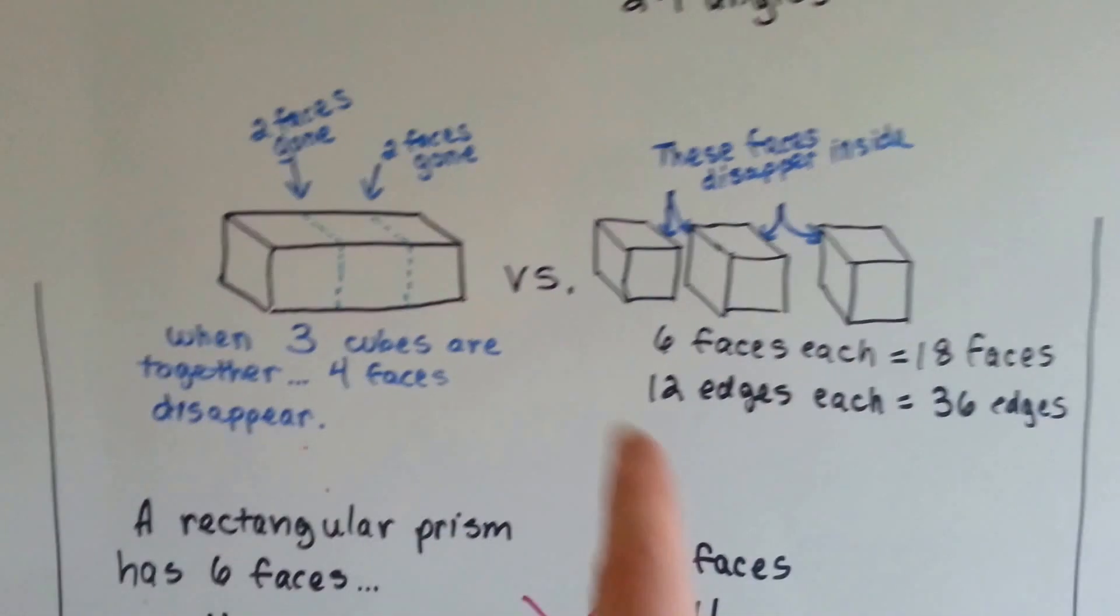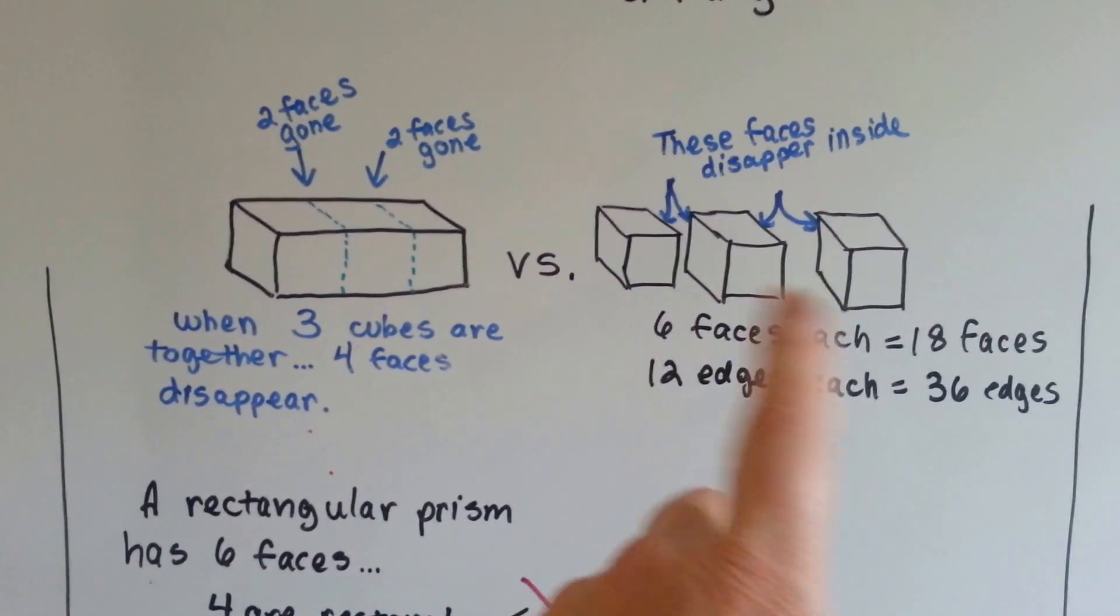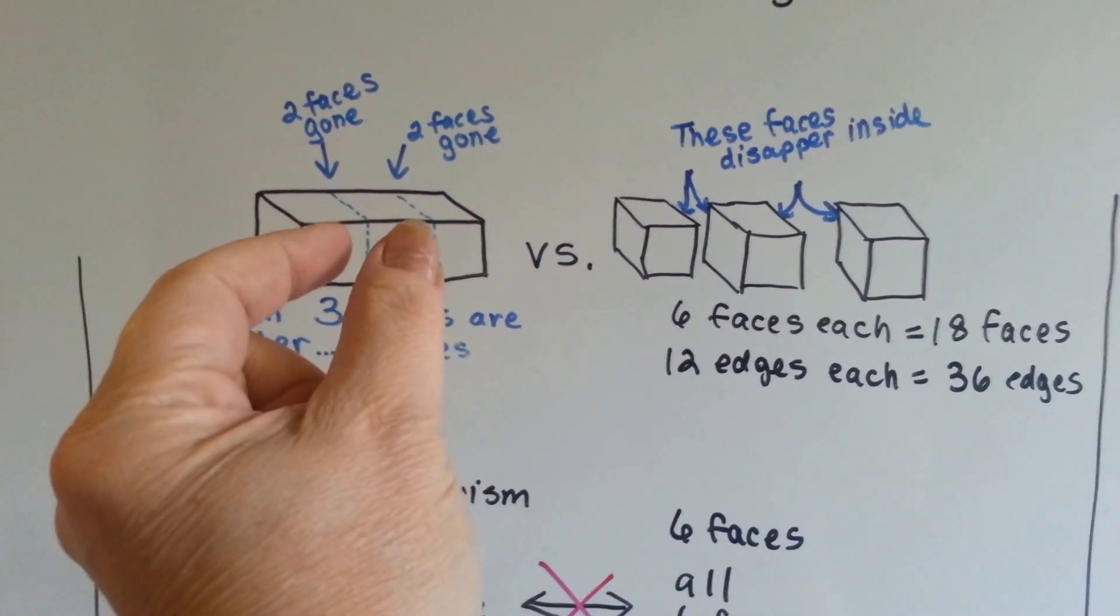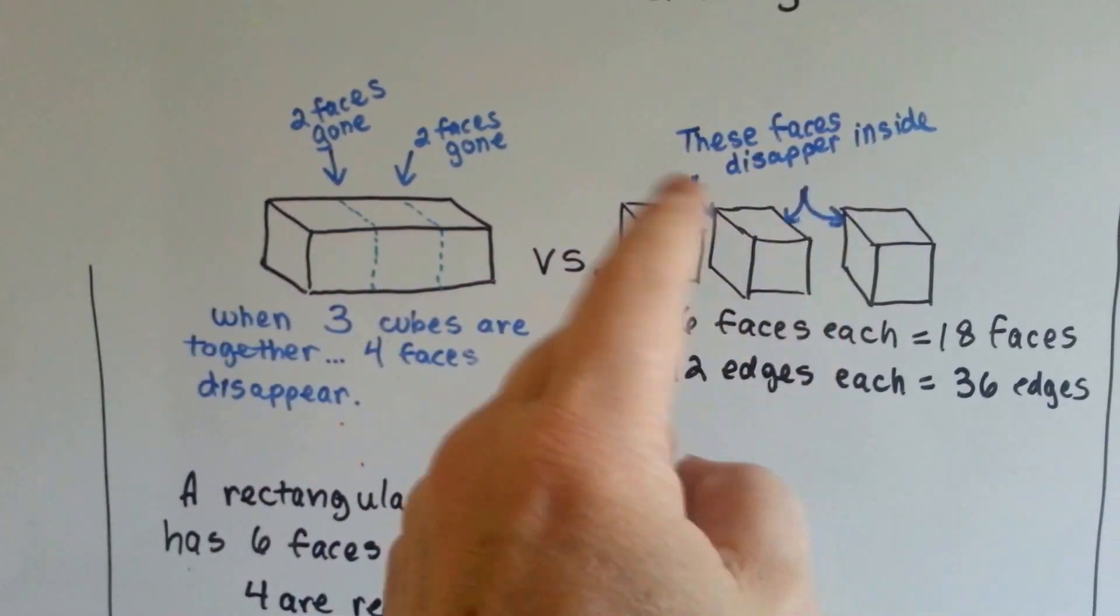Now, if we had three separate unit cubes with six faces each, that would be a total of eighteen faces. But if we smash them together, four of the faces are going to disappear.